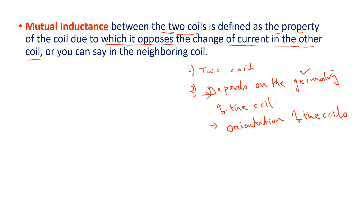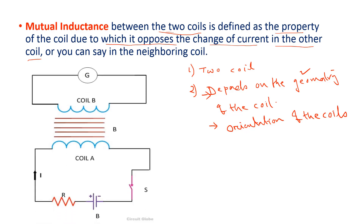So these are my two coils — assuming this is coil number one and this is coil number two. In coil one there is a source and there is a galvanometer. First, when we switch on the key, it means my current is increasing from zero to some value.